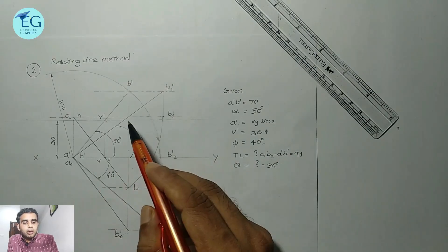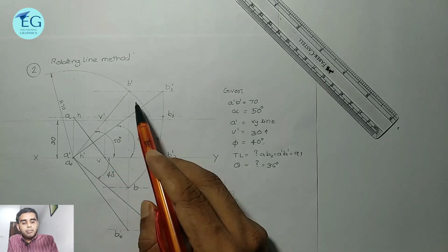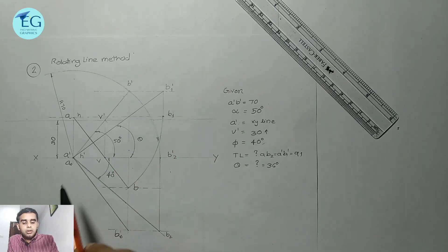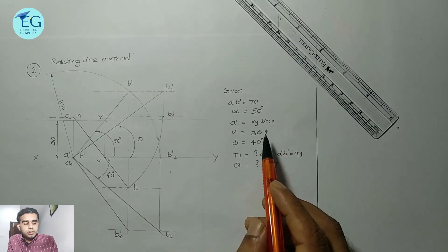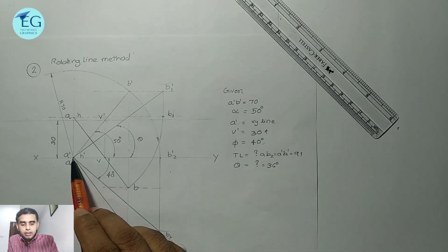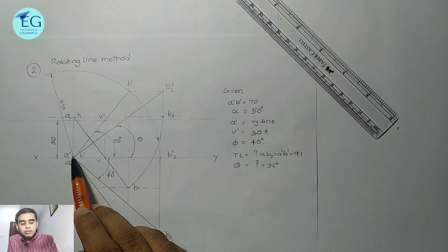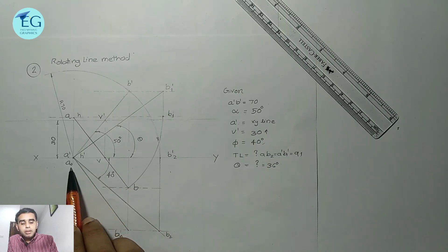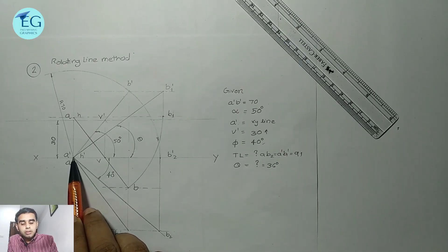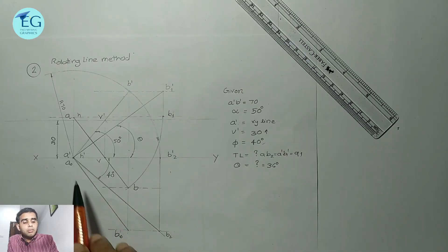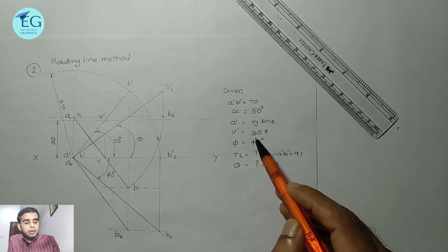We will now use the rotating line method. In this method, we assume the top view along the XY line. We assume a point on the XY line and use the length of the line. The point on the XY line is taken at 40 degrees.